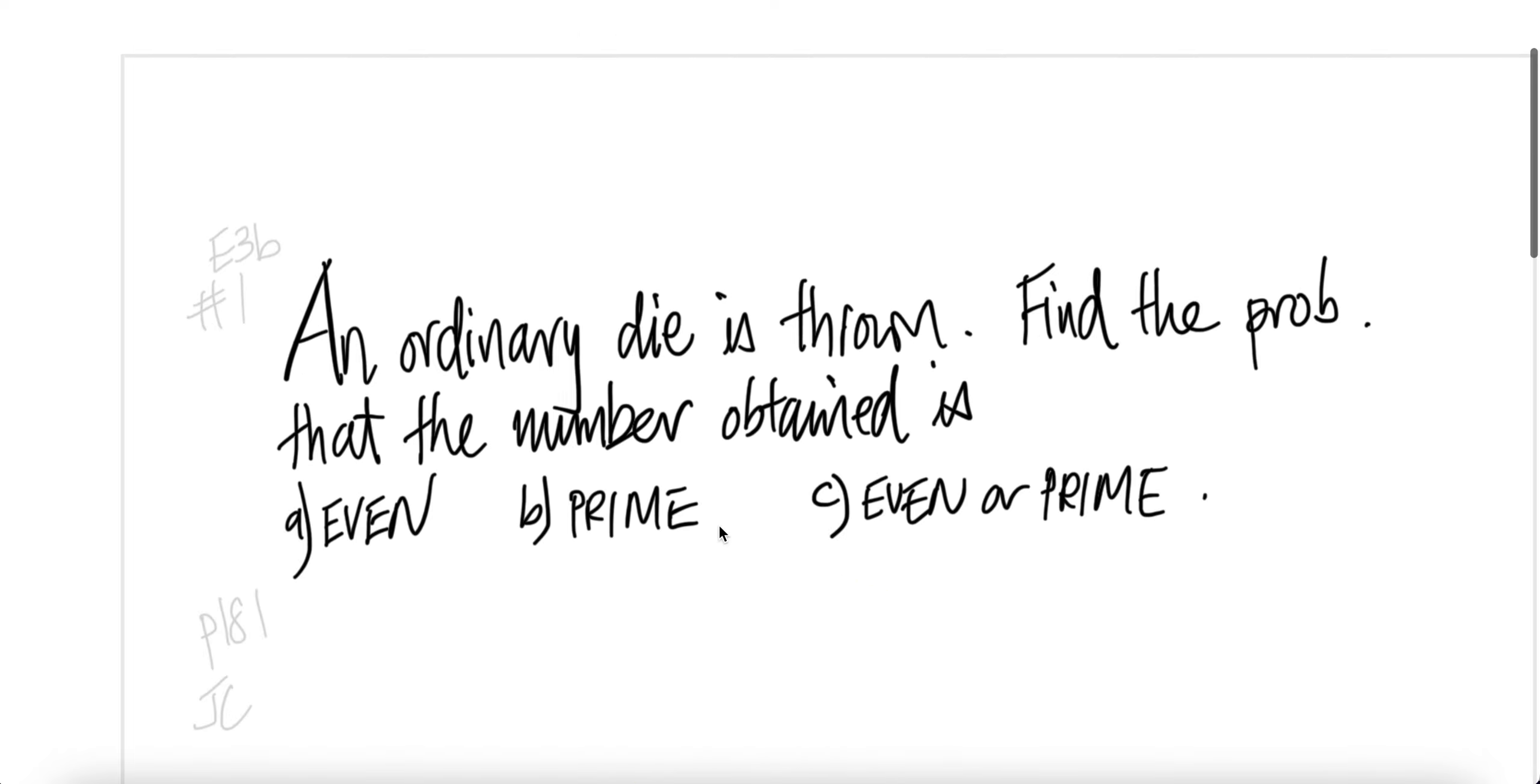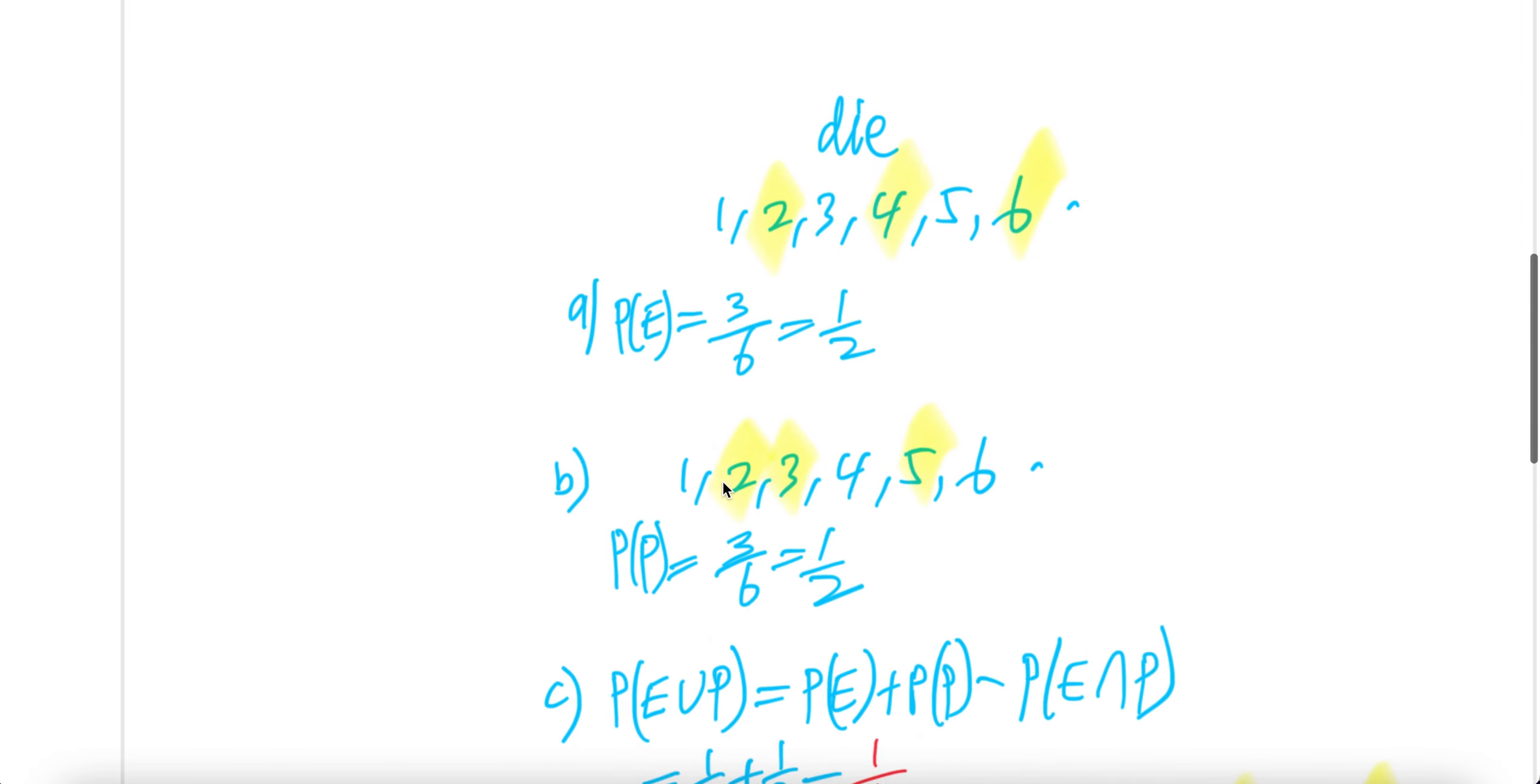Part B is prime. For prime, two, three, five is prime. So they have three primes here: two, three, or five is prime, divided by total number of possibilities is six. It'll be half again.